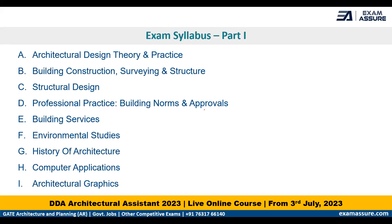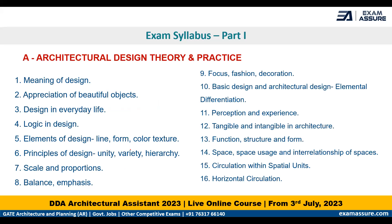For Part 1, the syllabus can be divided into broad subject categories like architectural design, building construction and surveying, structures, professional practice (which includes building norms and bylaws), building services, environmental studies, history of architecture, computer applications, and architectural graphics. We'll look at them in detail in the further slides.